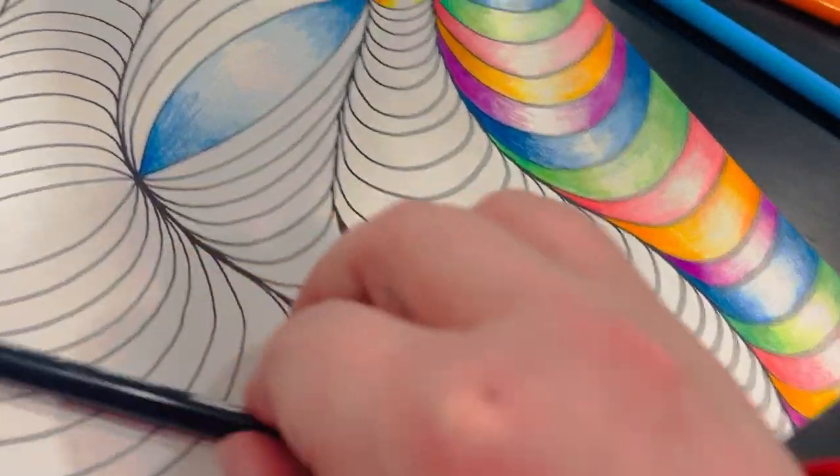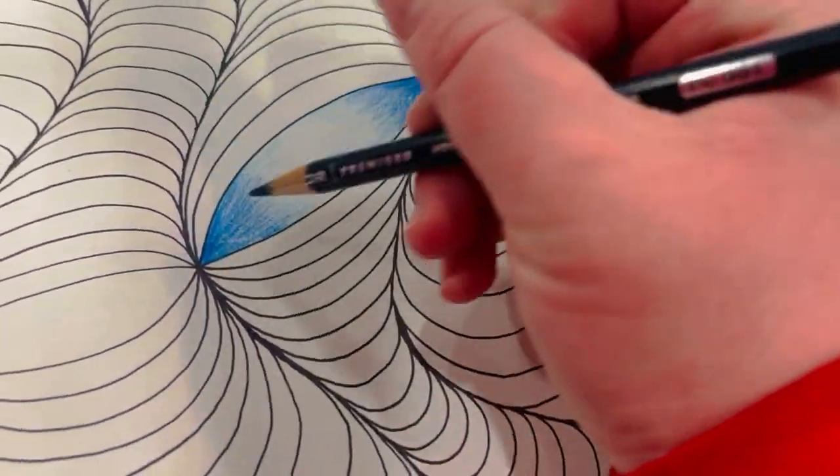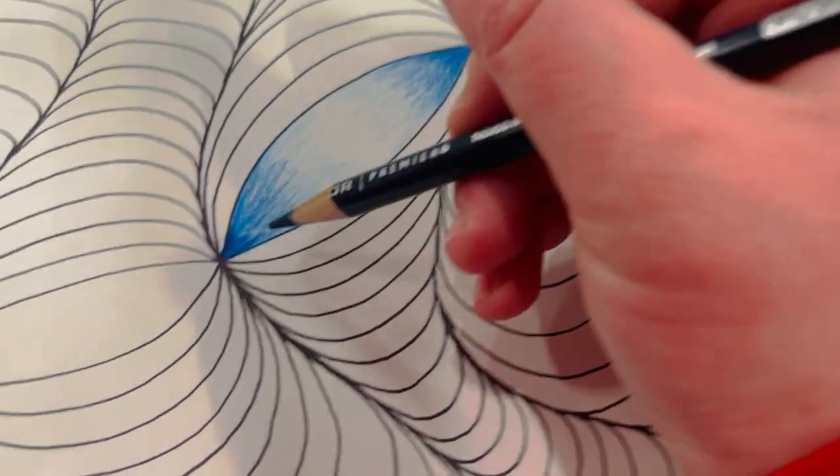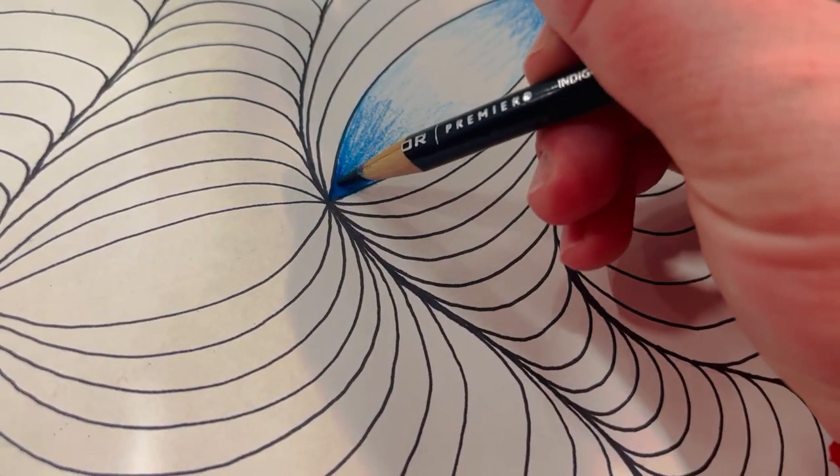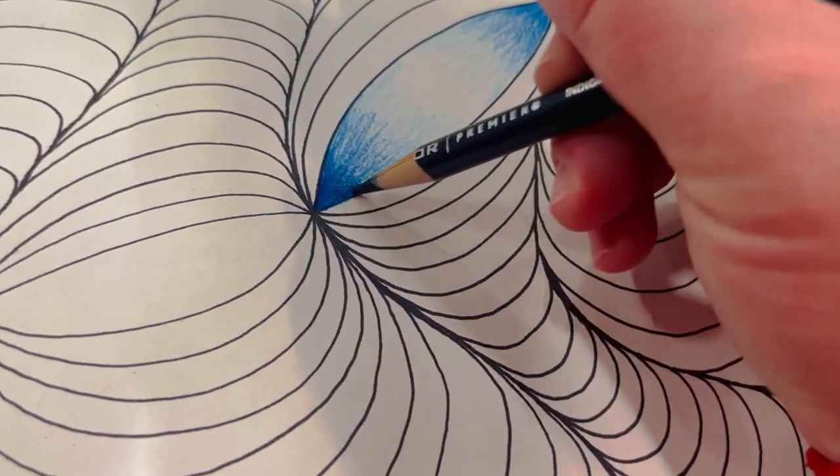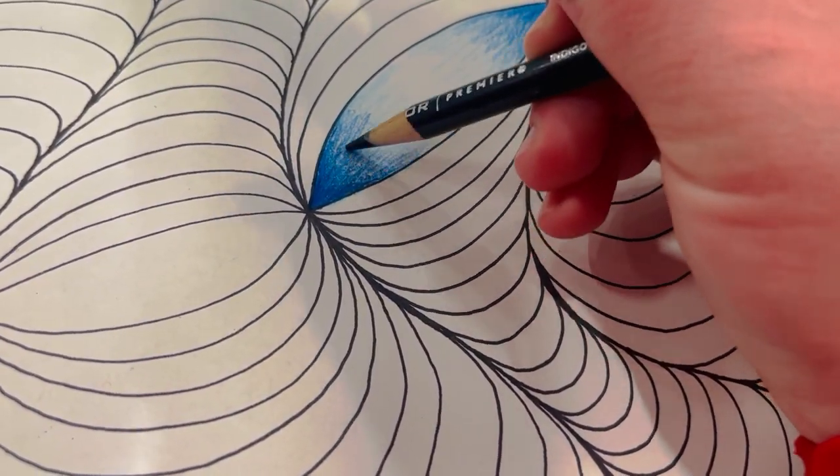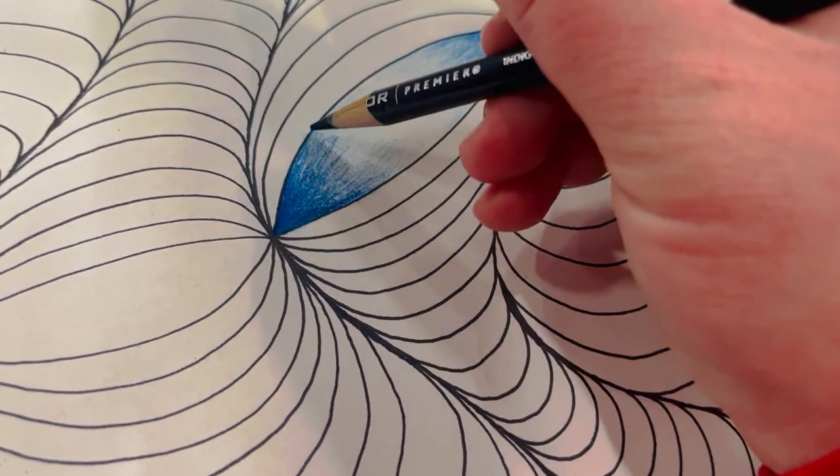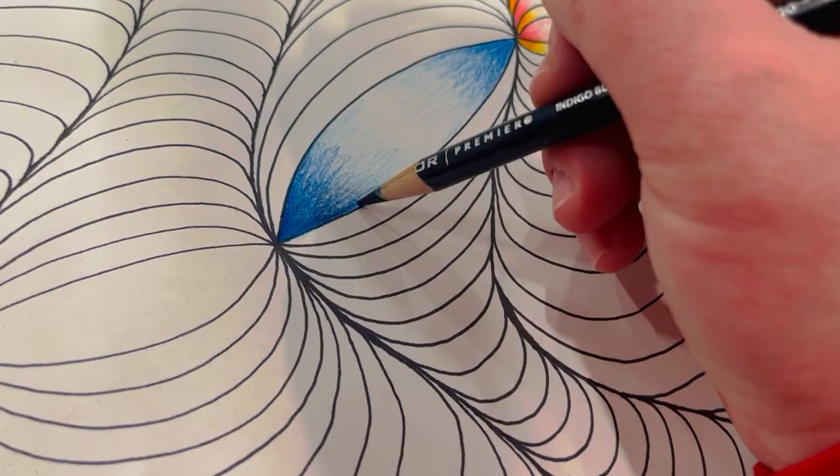Now I have my darkest blue. Doing the same thing, using a little bit more pressure on the edges, less and less as I move to the center, and stopping halfway in this area where I did the medium blue.